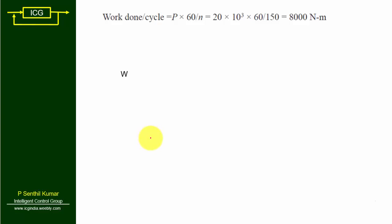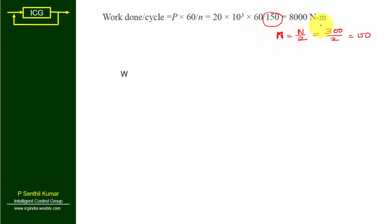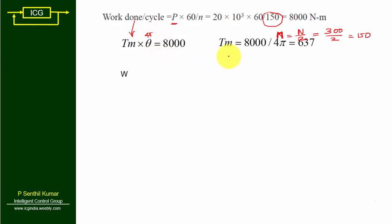Since power is given, work done per cycle equals power multiplied by 60 divided by N. For a four-stroke engine, n equals N/2, so N equals 150. Work done per cycle equals 20×10³ × 60 divided by 150, giving 8000 Newton meters. Then T_mean equals work done divided by theta (4π), so T_mean equals 8000 divided by 4π equals 637 Newton meters.